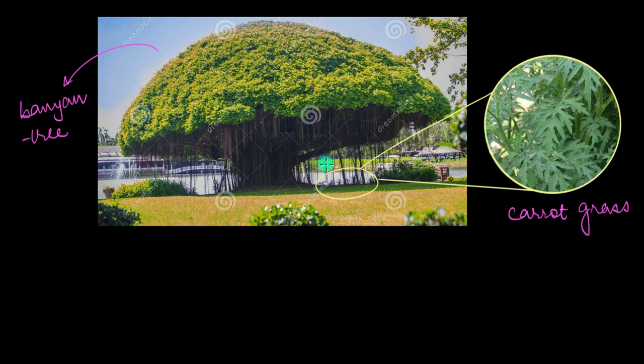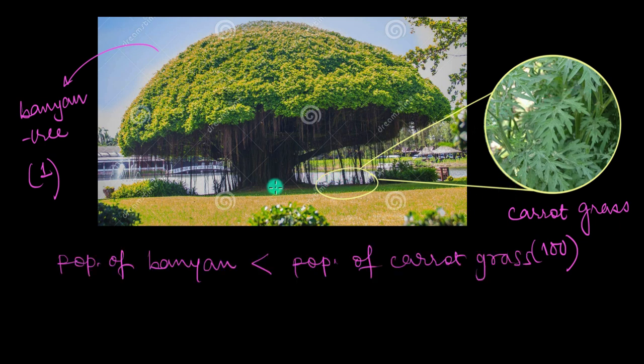But sometimes counting the number of individuals isn't enough to understand the population density of a species. Say you have this garden over here. Over there you have this one huge banyan tree that there is only one of these plants and there are multiple about let's say 100 carrot grass plants somewhere over here. Very tiny right over here. This is how they look.